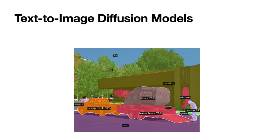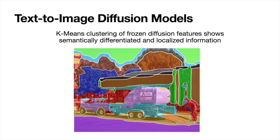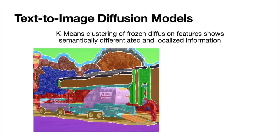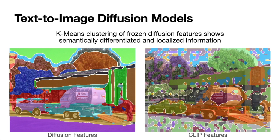Since text-to-image diffusion models can generate images with many diverse concepts, we wonder whether they could also be used for recognition tasks of many concepts. As a proof-of-concept, we visualize the results of clustering a diffusion model's internal features. While not perfect, the discovered groups are indeed semantically distinct and localized. In contrast, when we examine the internal features of the CLIP model, which has been proposed for use in recent Open Vocabulary recognition works, the clusters are much less semantically and spatially distinct.